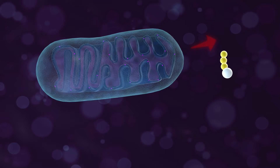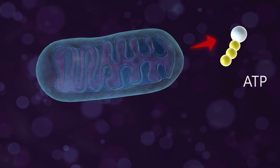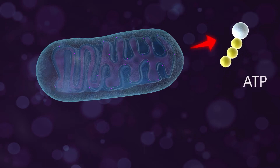As light is absorbed, cytochrome C is stimulated, leading to increased production of ATP, the molecule that facilitates energy transfer within the cell.